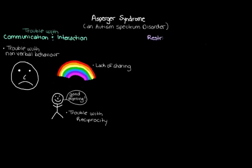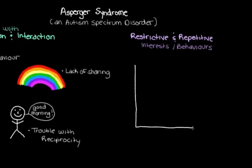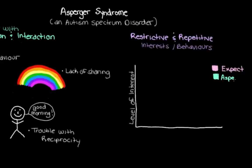There's one other main feature of Asperger's, and that's restricted interests and repetitive behaviors. To see what we mean by restricted interests, let's draw a graph that shows the level of interest in a few different activities. On the y-axis we have the level of interest — the higher up, the more interest there is. On the x-axis we'll put down some different activities. We'll use pink to show what we might expect from the average child, and green to show what we might see from a child with Asperger's.